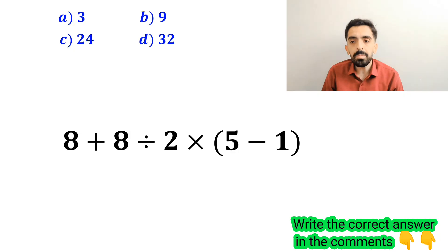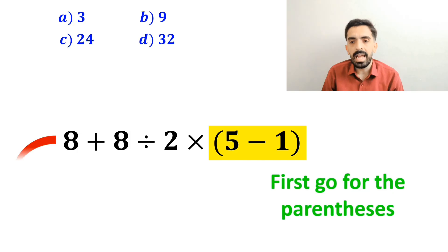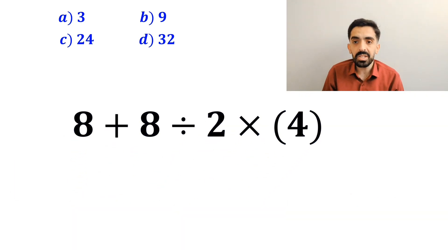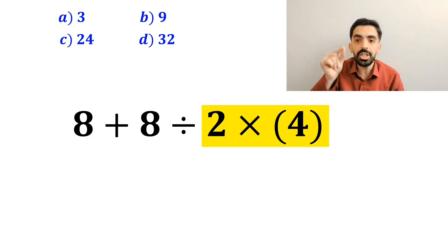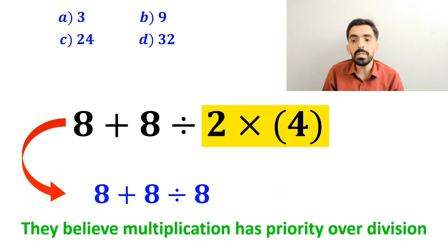Also, some other people when solving this question first go for the parenthesis and write this expression as 8 plus 8 divided by 2 times 4. In the next step, they go for the multiplication between 2 and 4, because they believe multiplication has priority over division.